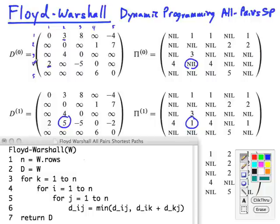For example, here's another one. Is it cheaper to go 4 to 5 direct? That's infinite. Or 4 to 1, which is 2, and 1 to 5, which is negative 4. And that gives us the negative 2 and says, yeah, we got to go through 1. Now let's look at k equal 2.